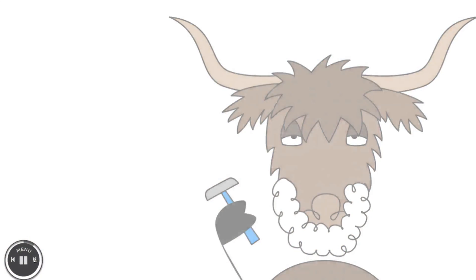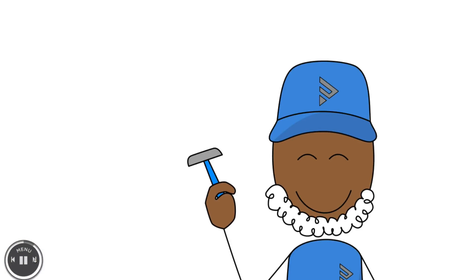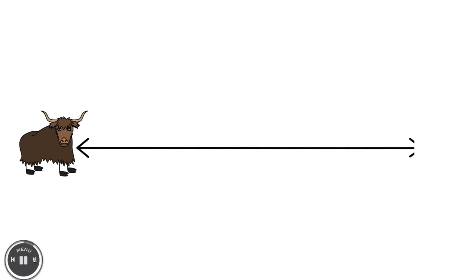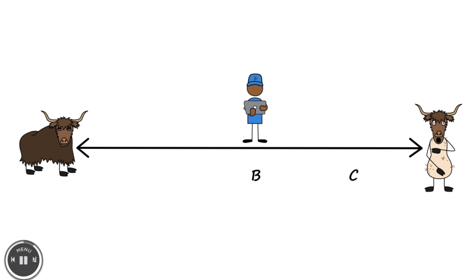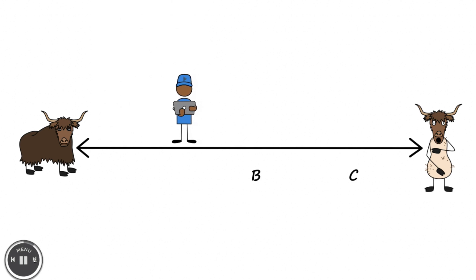Consequently, yak shaving has become the internationally recognized metaphor for doing annoying prerequisite tasks. Whenever you feel like you're going backward instead of making forward progress, because you have to complete an unforeseen task before you can complete another unforeseen task just to complete whatever task you believe is your desired next task — well, that's yak shaving.